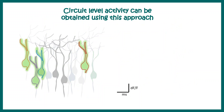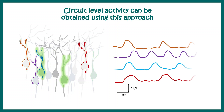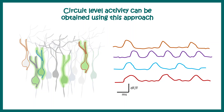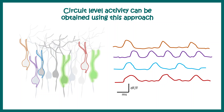A key advantage is that we can draw ROIs — regions of interest — around specific neurons from a live imaging movie and calculate fluorescence over time. This gives us an idea of how neurons are firing over a time period. For example, one neuron marked by the orange trace has three peaks, while the violet trace shows many more peaks.